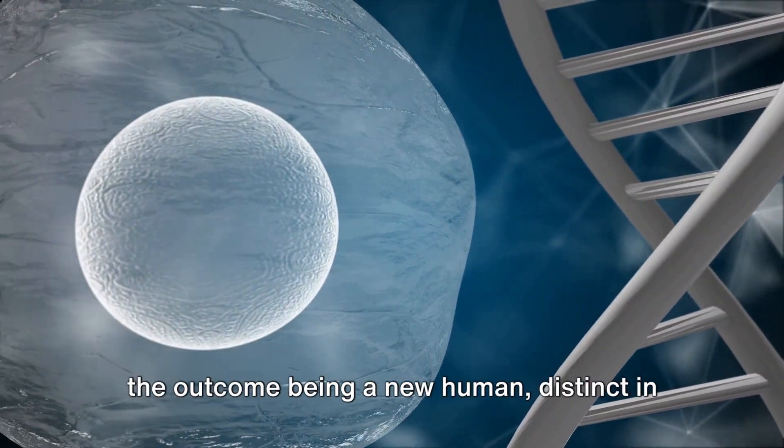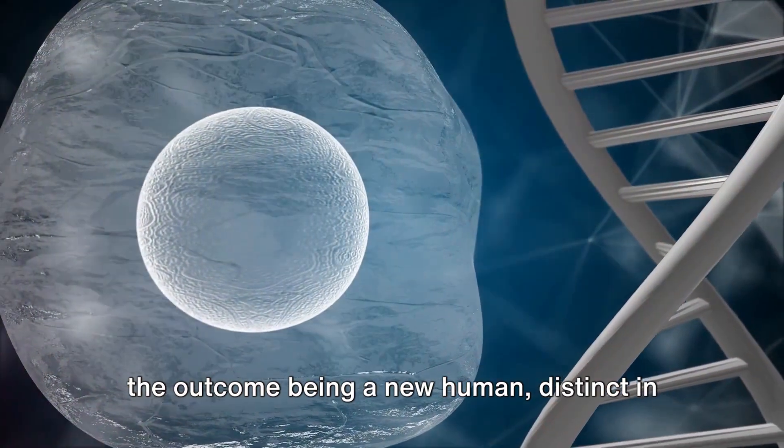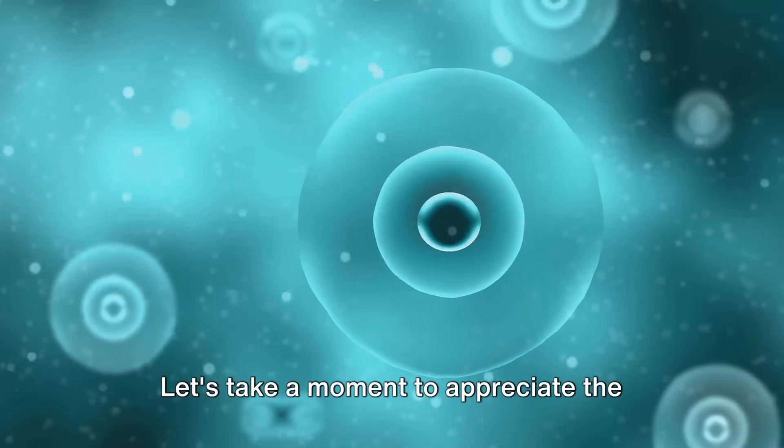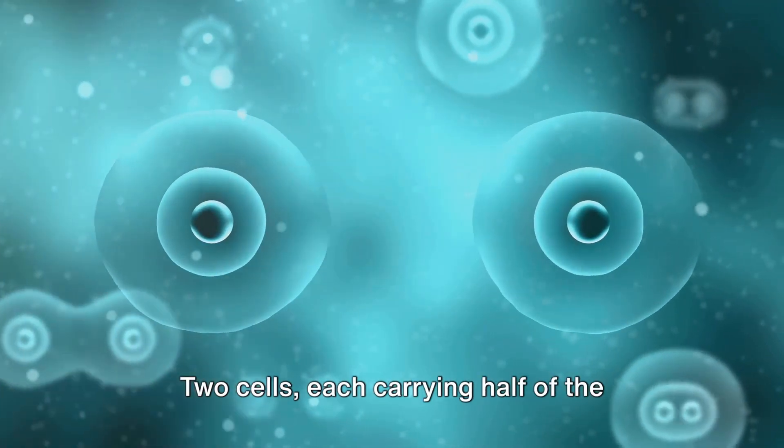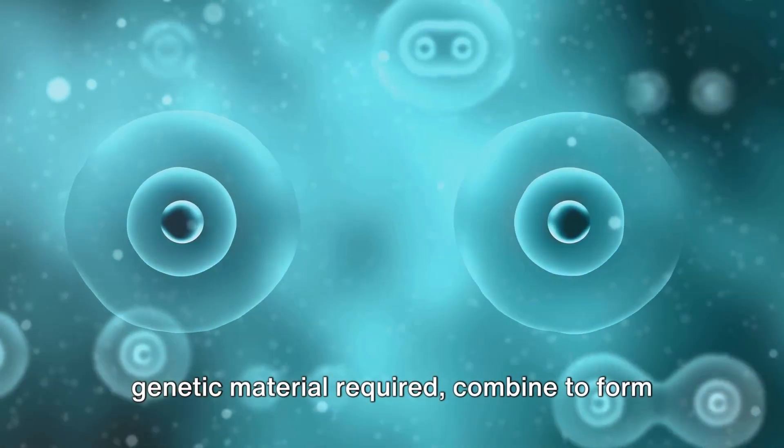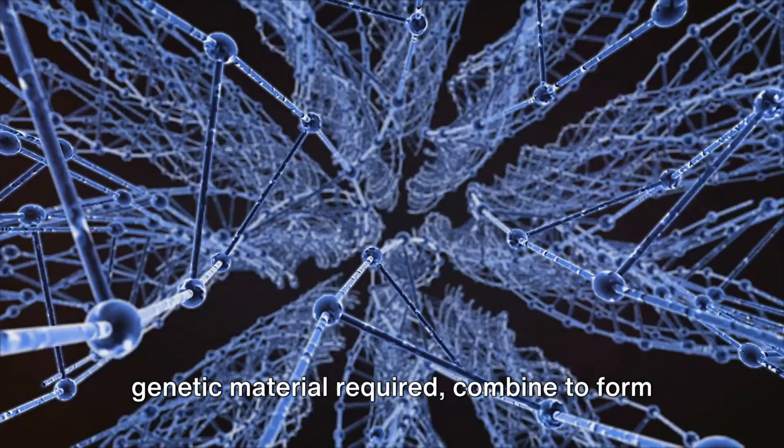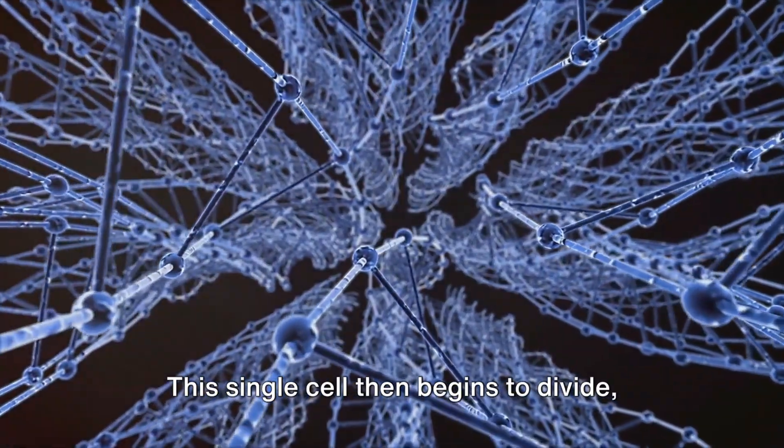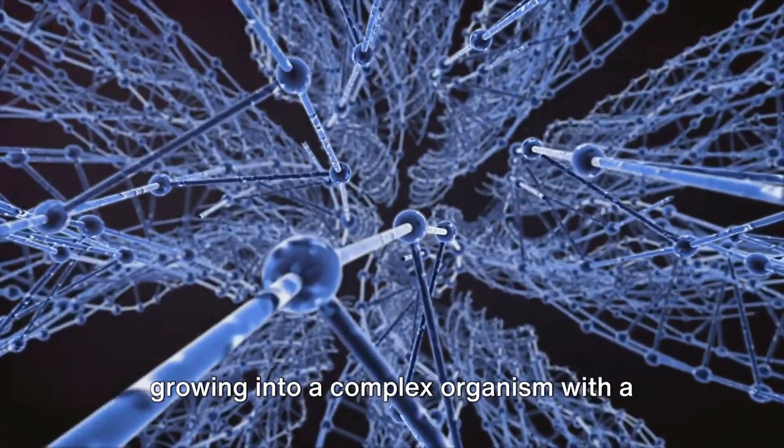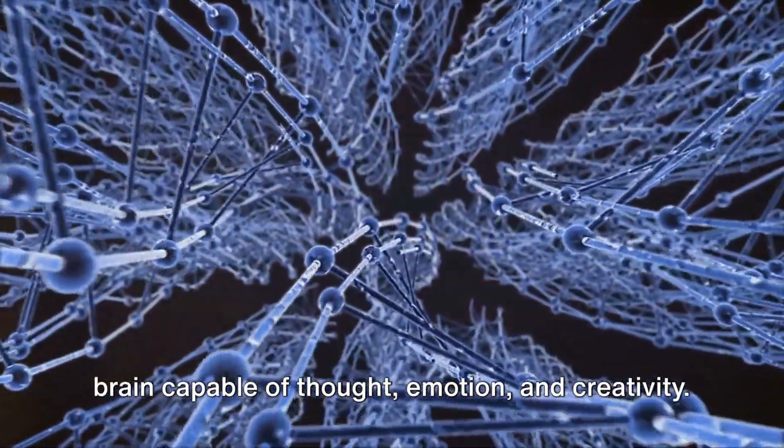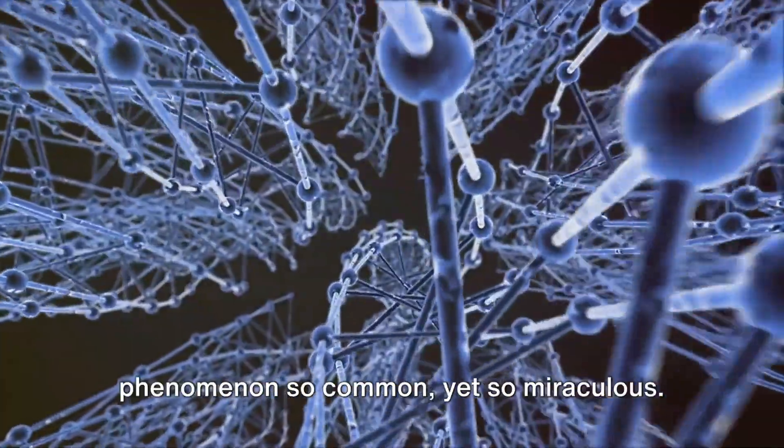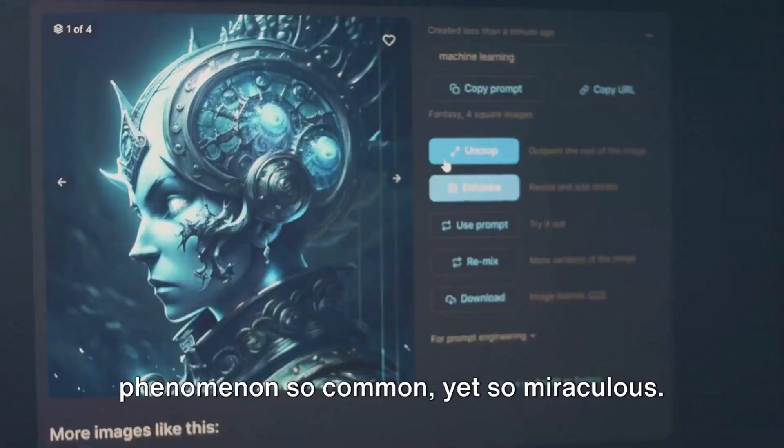It's a game of chance and survival with the outcome being a new human, distinct in their own right. Let's take a moment to appreciate the complexity of this process. Two cells, each carrying half of the genetic material required, combine to form one cell. This single cell then begins to divide, growing into a complex organism with a brain capable of thought, emotion, and creativity. This is the birth of new life, a phenomenon so common yet so miraculous.